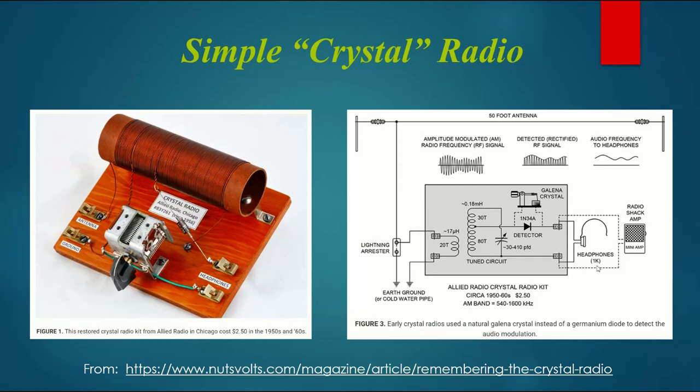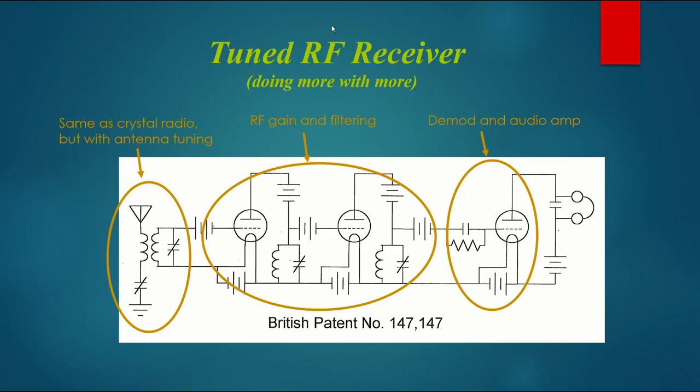You probably noticed that all those examples so far are somewhat older designs that use discrete devices: vacuum tubes, BJT transistors, and junction field effect transistors, JFETs.